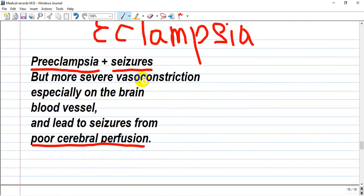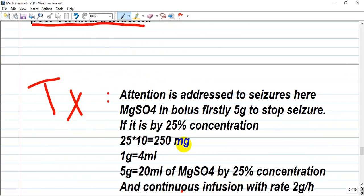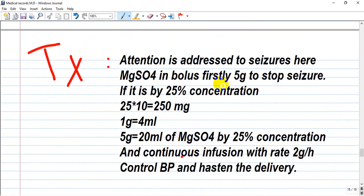Eclampsia is preeclampsia plus seizures, but more severe vasoconstriction, especially in the brain. It is the cause that occurs seizures. Blood vessels are constricted very rapidly, occurs suddenly and leads to seizure from poor cerebral perfusion. What is the treatment of eclampsia? In eclampsia, attention is addressed to seizures. Look at seizures - magnesium.